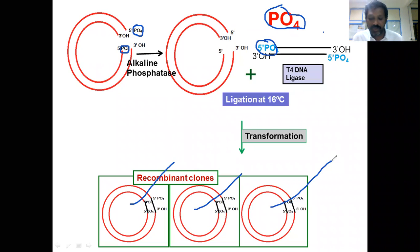How is this possible? When a dephosphorylated vector does not have 5' phosphates, there is no possibility to form a phosphodiester bond between the 3' OH and 5' phosphate of the vector. Now the phosphodiester bond is formed between the 3' OH of the vector and 5' phosphate of the insert.